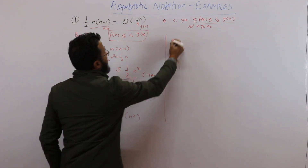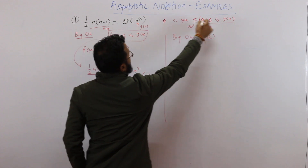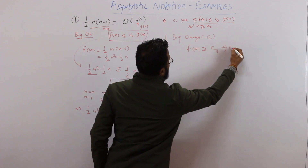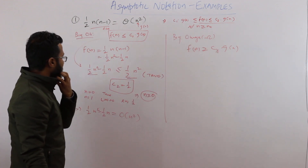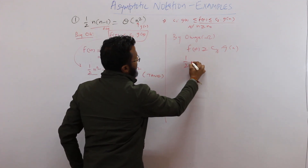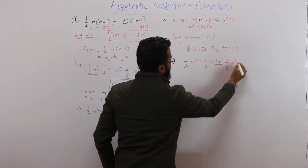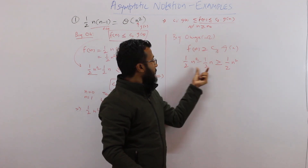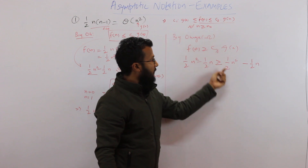Now let's do big omega. For big omega, I have to show that f(n) is greater than or equal to c1 into g(n). So f(n) = ½n² minus ½n. Can we say that ½n² minus ½n is greater than or equal to ½n²? They are equal when taken alone, but if I want to make the right-hand side less, I need to subtract a larger value from it.